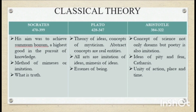The basic concept of classical theory was given by Socrates, Plato, and Aristotle. Socrates believed that he aimed to achieve someone's unbound and highest good in the pursuit of knowledge, through methods of mimesis or imitation. Plato believed in the concepts of mysticism; abstract concepts are real entities, and he believed that all arts are imitation of ideas — mimesis of ideas.